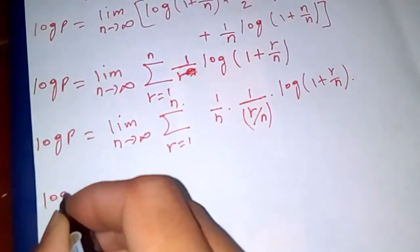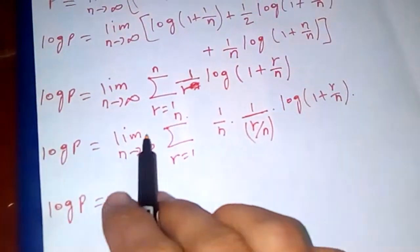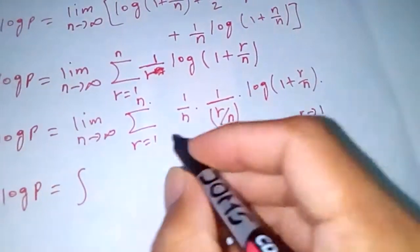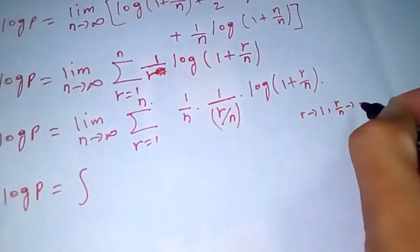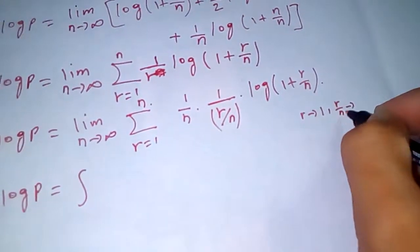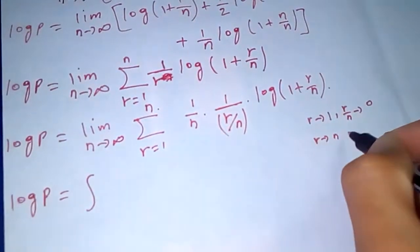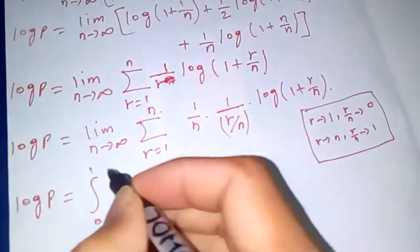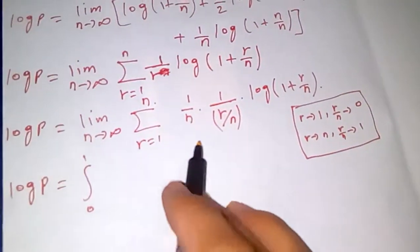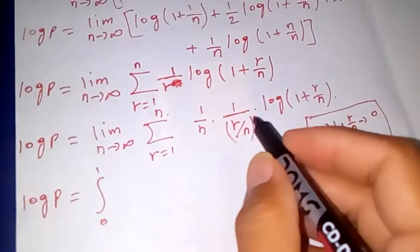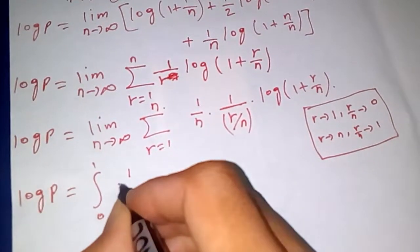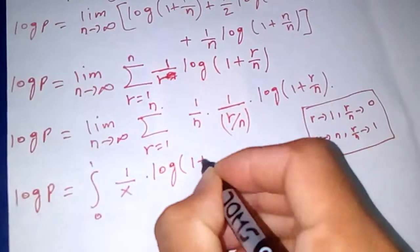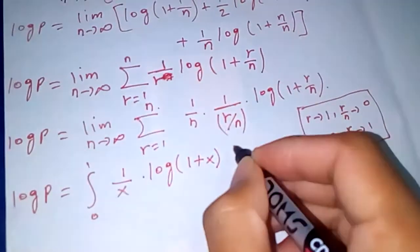Now we put this in integral form. Replace limit as n tends to infinity of the summation with an integral. When r tends to 1, r/n tends to 0 since n tends to infinity. When r tends to n, r/n tends to 1. So we integrate from 0 to 1. Replace 1/n by dx and r/n by x, giving (1/x) log(1 plus x) dx.